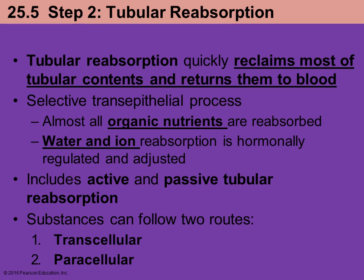If we first look at the second part, which is tubular reabsorption — step 2 — you have filtered most things out of the blood in the glomerulus and Bowman's capsule, and now you're moving into the tubular network. Tubular reabsorption is going to take most of the contents that are in that filtrate, which ultimately is going to form the urine, and most of it is going to be returned to the blood. So just about all of your organic nutrients are put back into the blood. Reabsorption means you're taking material out of this newly formed filtrate and moving it back into the blood.